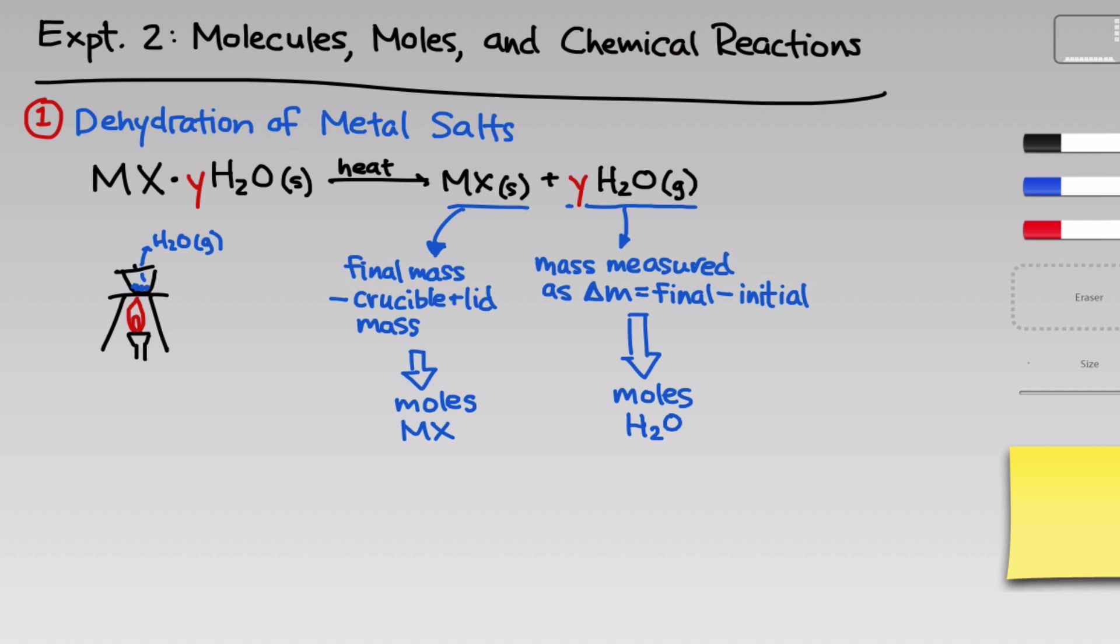We can take this ratio for each of the four possibilities, and that allows us to identify which one is closest to reality, which one is closest to the known number of waters of hydration that you'll find in the laboratory manual. By determining that, we can identify the identity of this unknown sample.